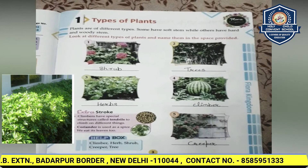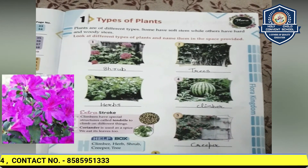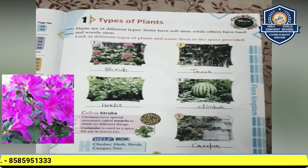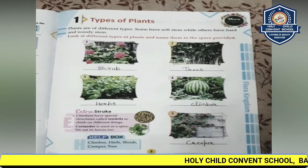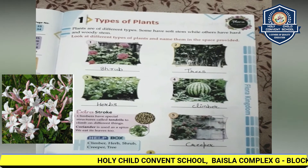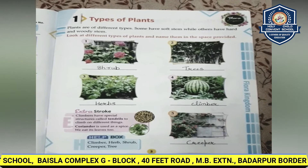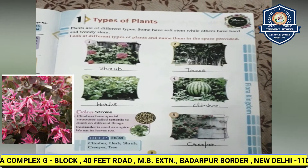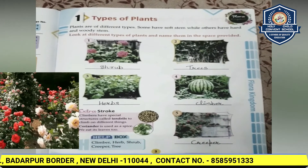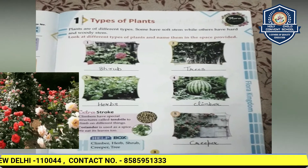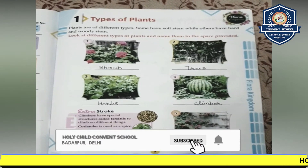Shrubs are generally smaller than trees — trees se chote hote hain. Their height usually ranges between six to ten meters tall. Although their stems are hard, they are flexible but not fragile. Rose, jasmine, lemon, tulsi, and henna are some common shrubs around us. As we can see in the picture, rose flower grows on shrubs.